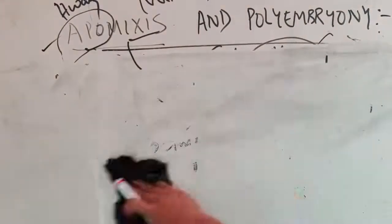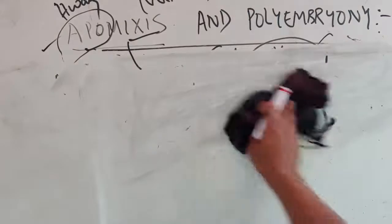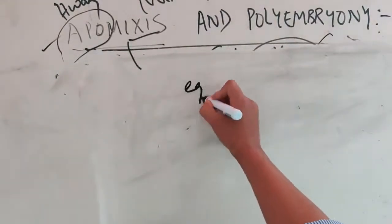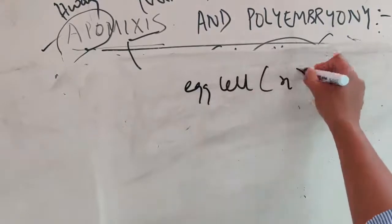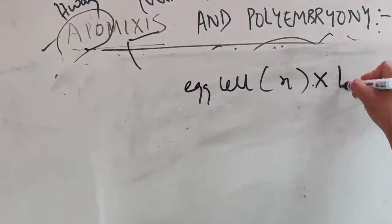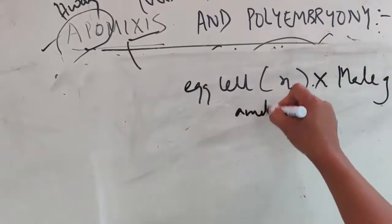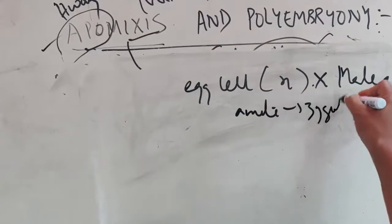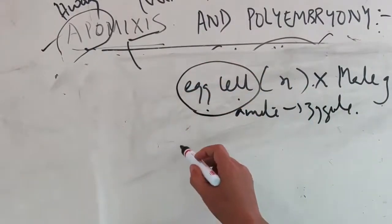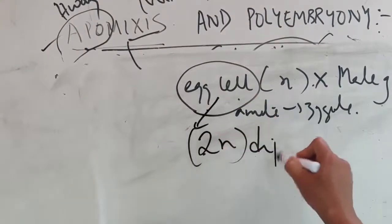In normal reproduction, the egg cell is haploid and it fuses with the male gamete to form a zygote, and the zygote develops into an embryo. This is the normal process in the Asteraceae family. But in apomixis, the egg cell can be diploid.